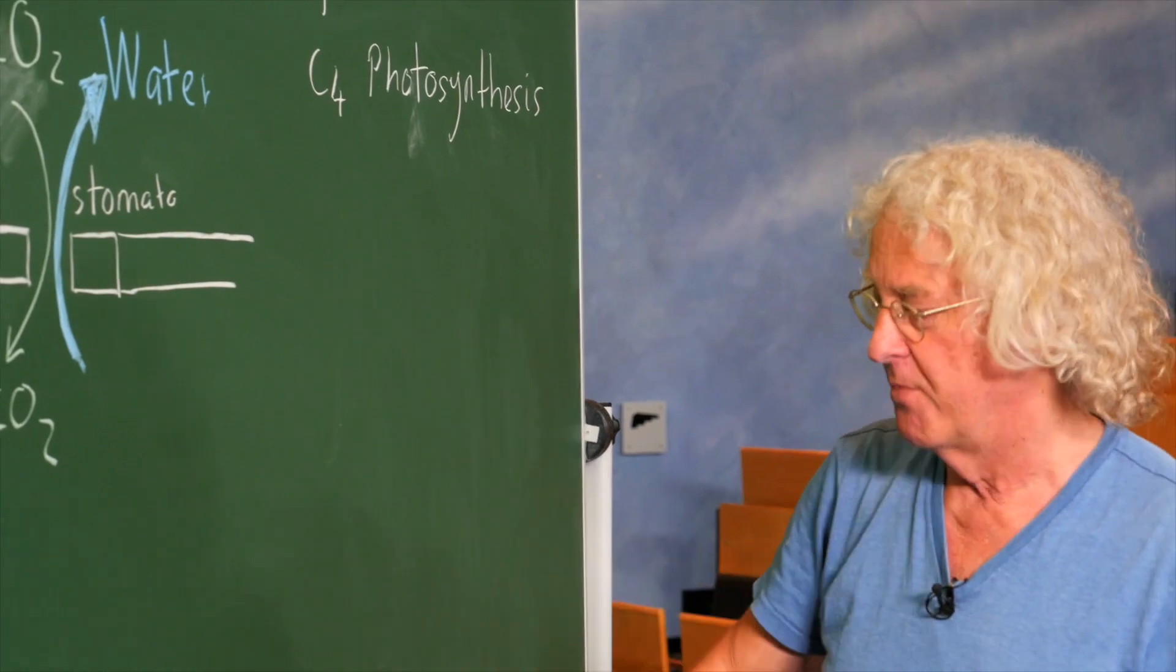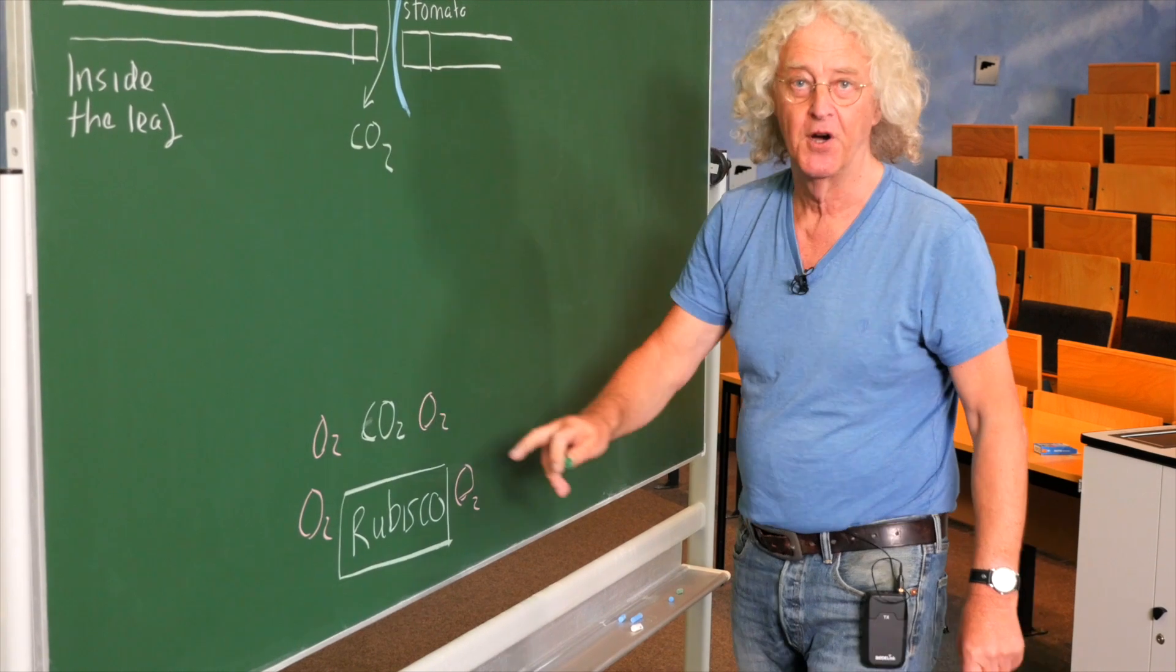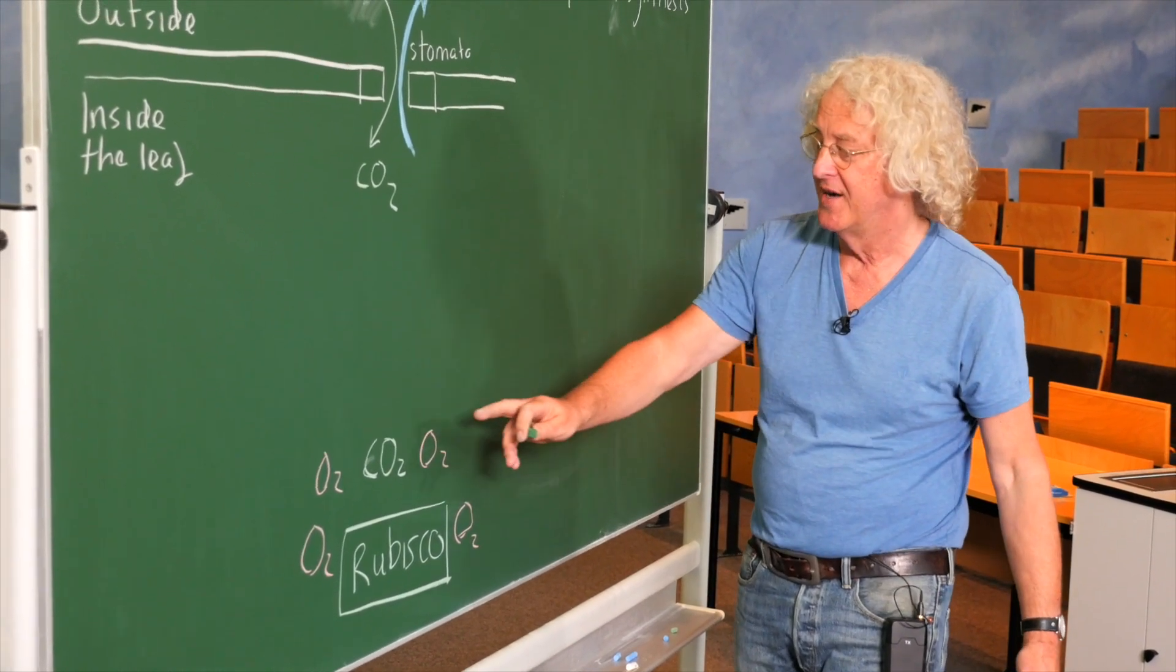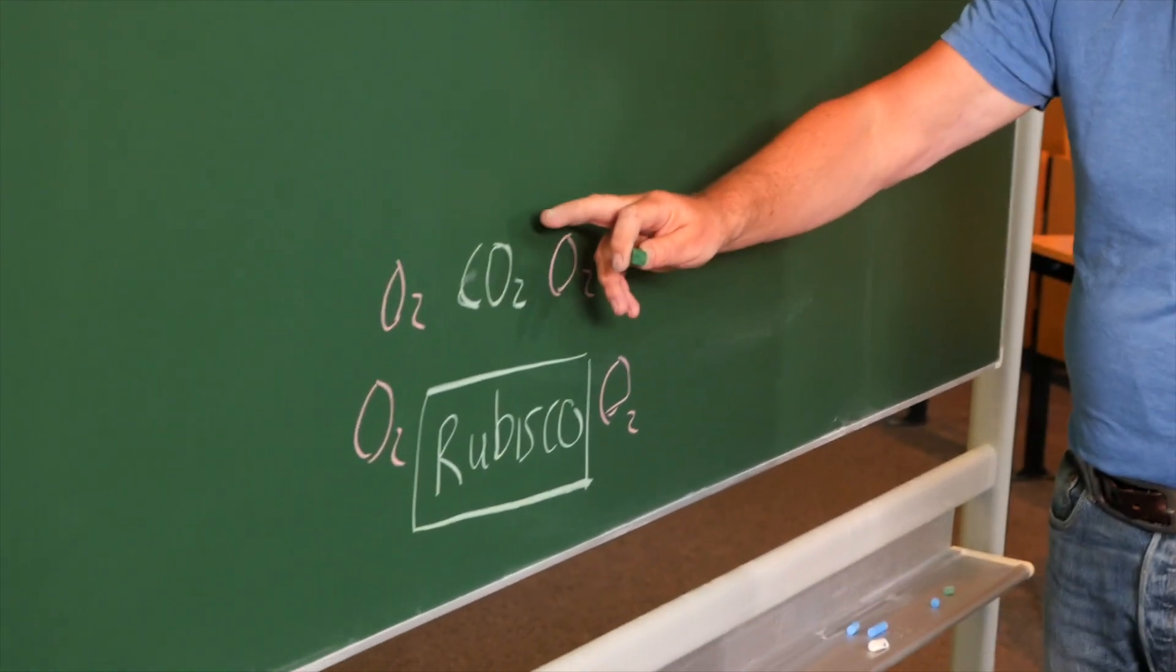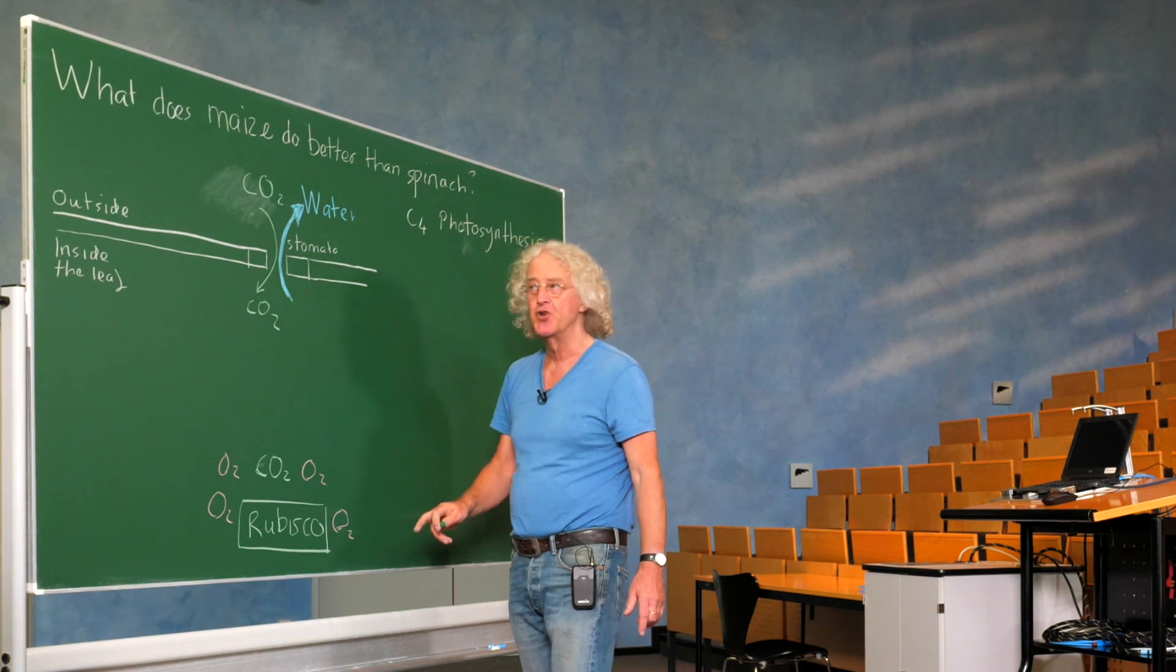The second problem they have is that the enzyme, the protein that uses carbon dioxide, the first reaction with carbon dioxide, this enzyme has a low affinity for carbon dioxide and a competing reaction with oxygen.